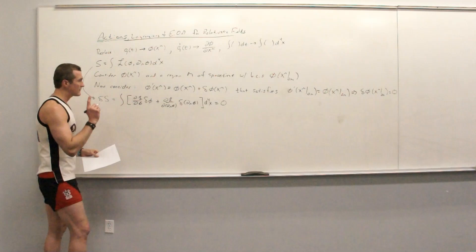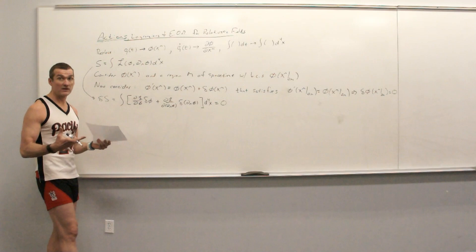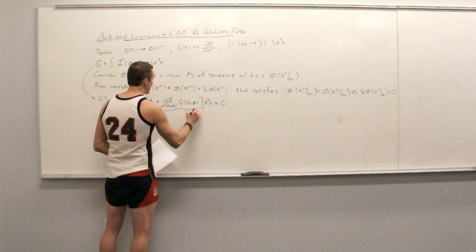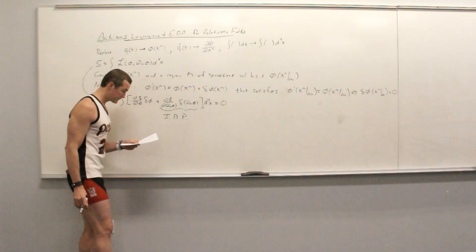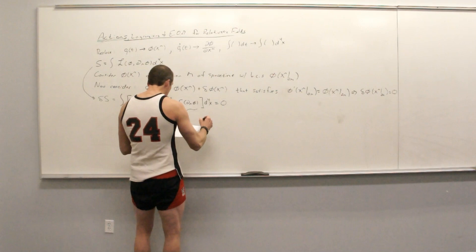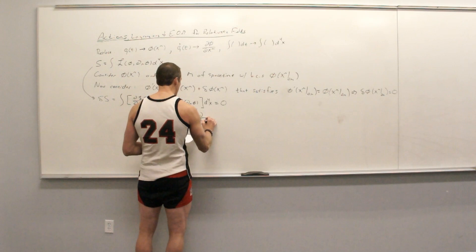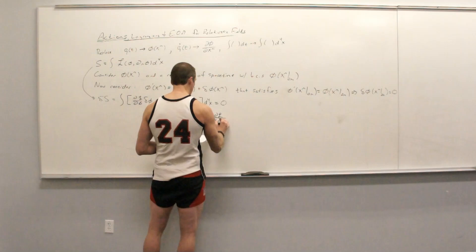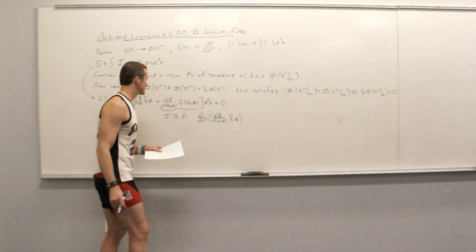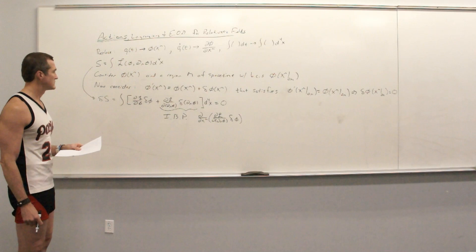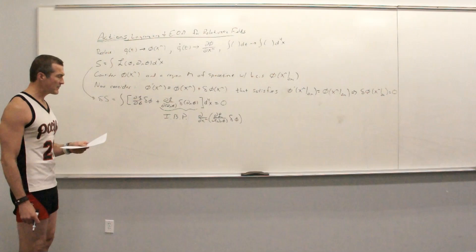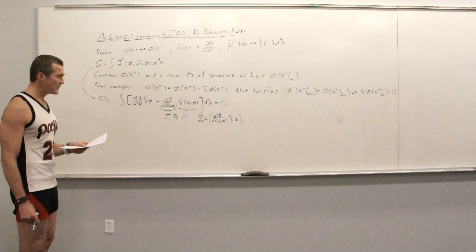We want to consider the variation of S. We're going to vary this: we take the partial derivative of L with respect to phi and multiply by the variation of phi, and then take the partial derivative of L with respect to d-mu phi and consider the variation of the derivative of phi. This is like taking a derivative of a function of phi and d-mu phi. Now we need to integrate by parts.